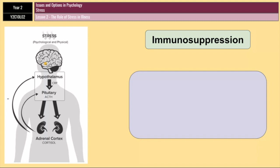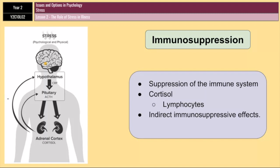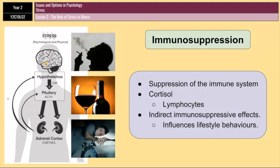Stress can also have an indirect impact on the immune system in that it influences certain lifestyle behaviors, such as smoking and drinking, and it can also impact our sleep patterns. The fact that stress affects these different areas of our life can in turn have a detrimental effect on our immune functioning, and there is evidence that this happens across many different stress experiences.